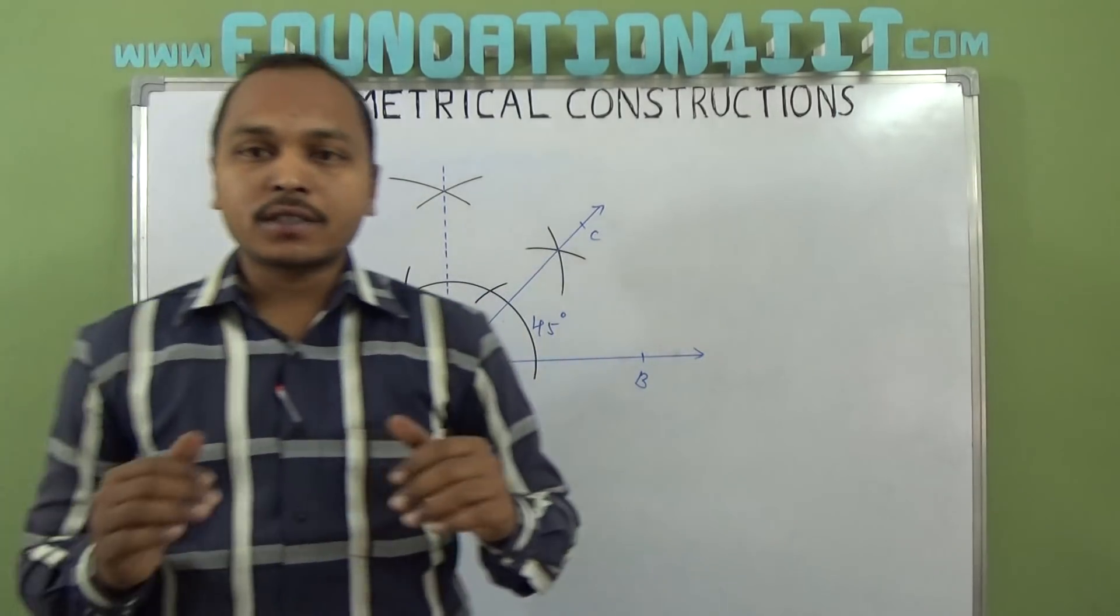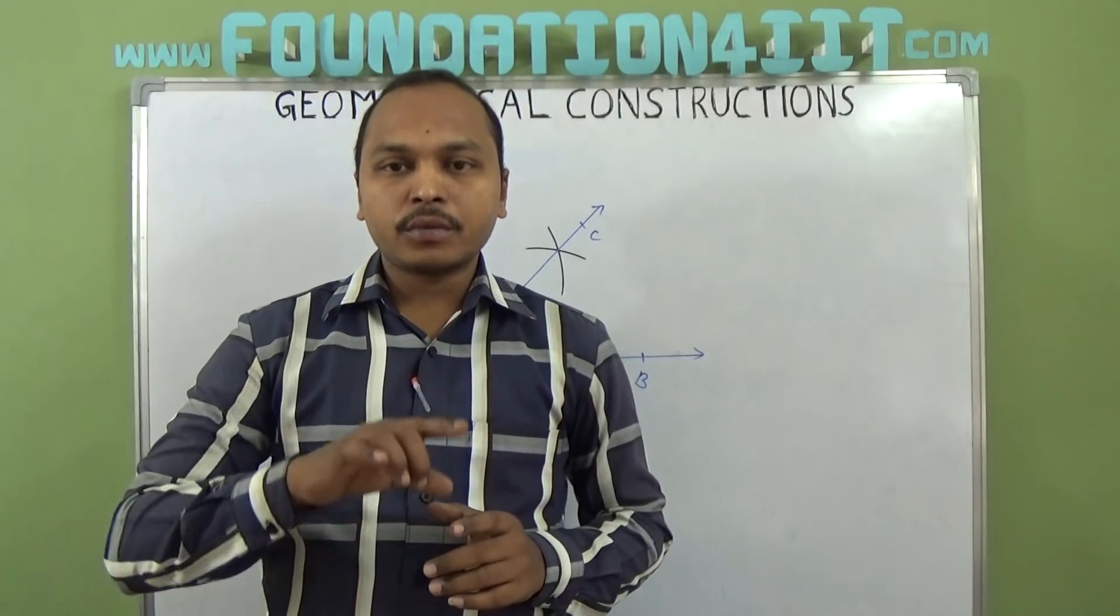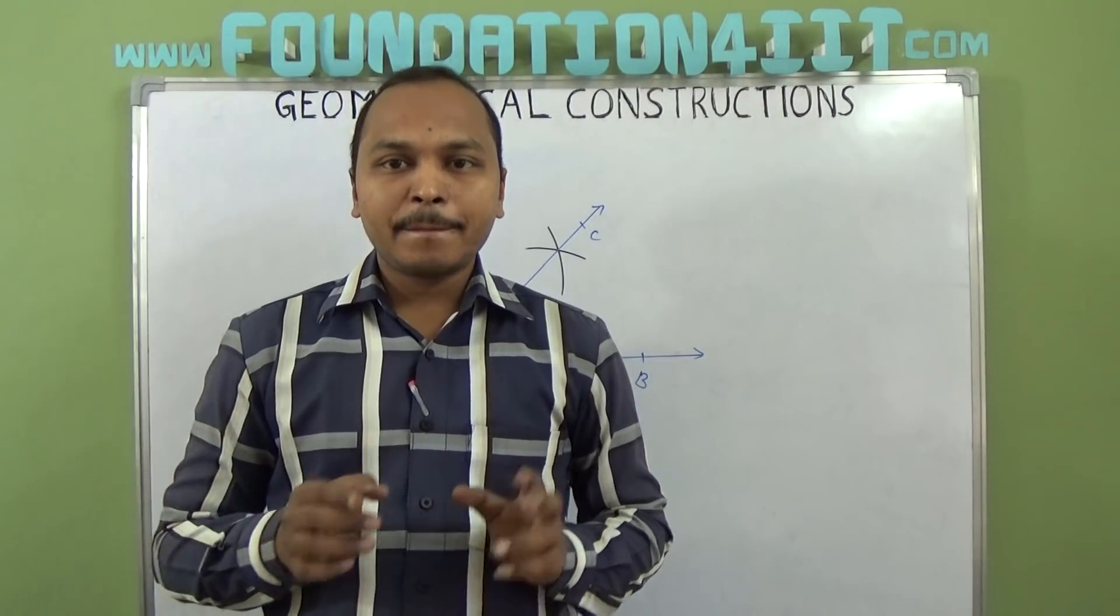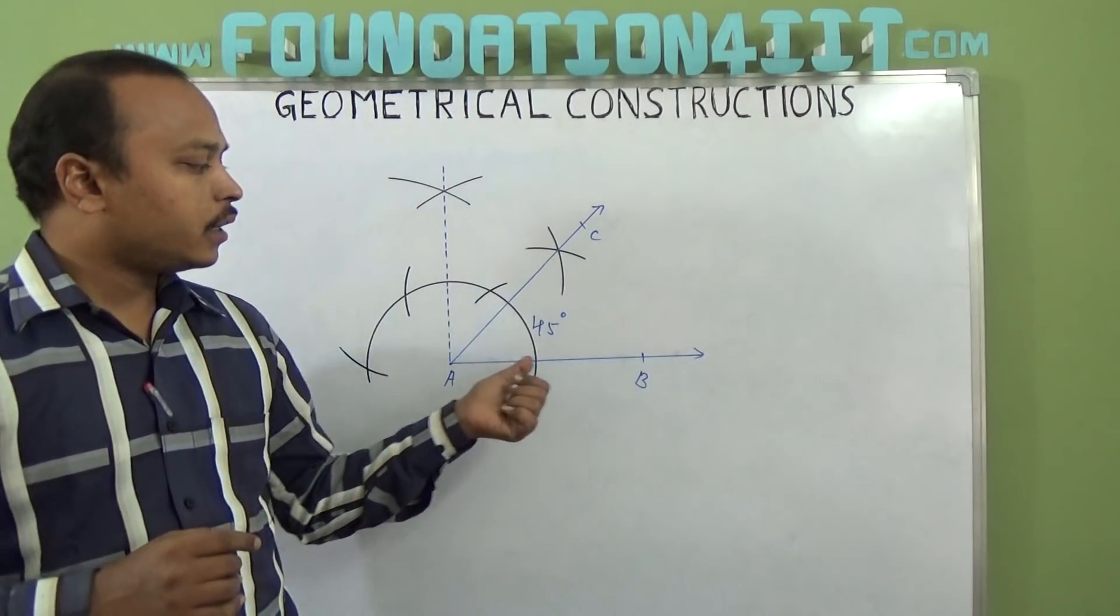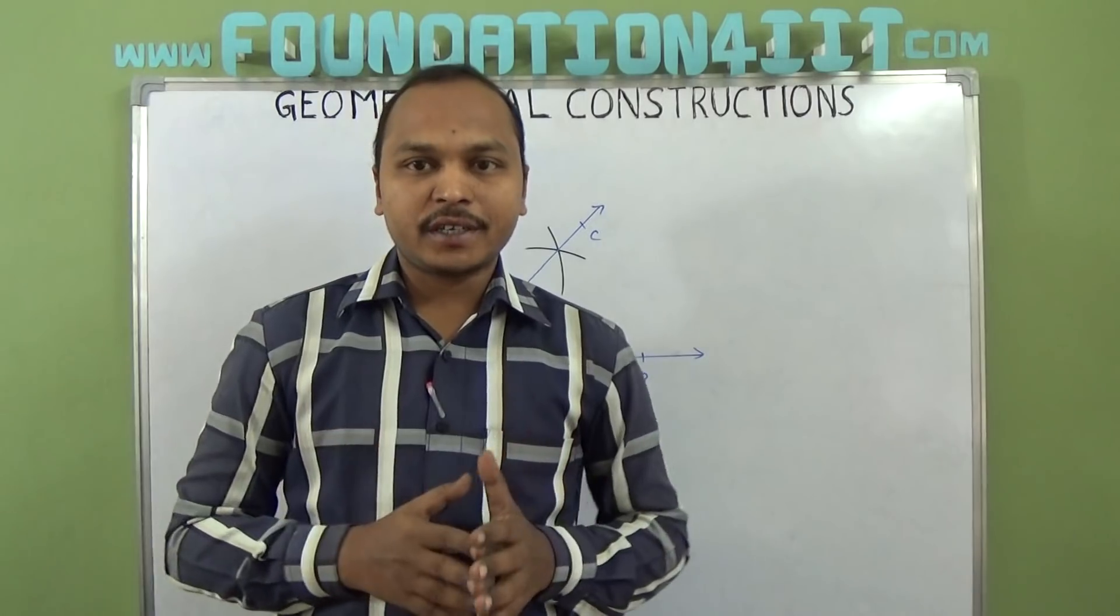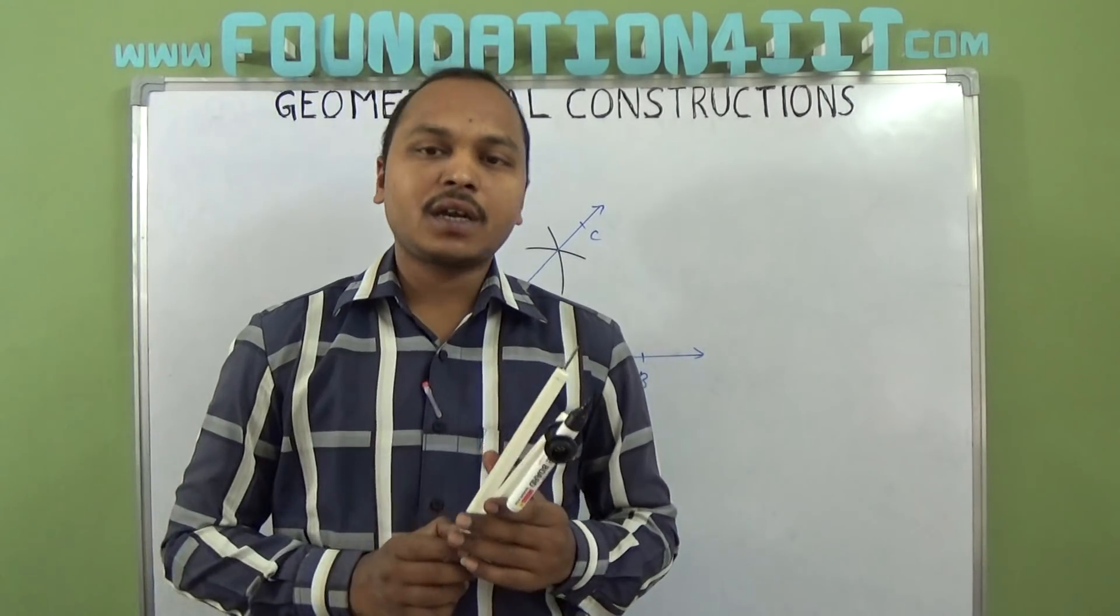So this way we can construct 45 degrees. You have to make arcs at 60, 120, 180. Then if you bisect the angle between 0 and 180, 90 will come. Again, if you bisect the angle between 90 and 0, 45 degrees will come. This is how you can construct 45 degrees using a compass.